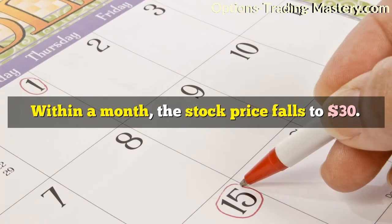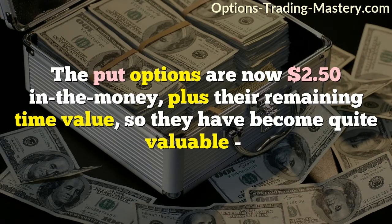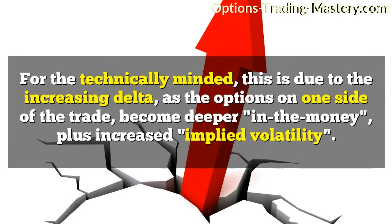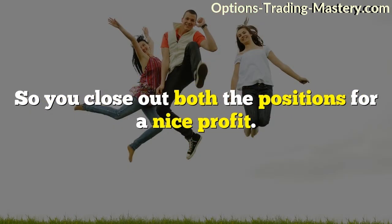Within a month, the stock price falls to $30. The put options are now $2.50 in the money, plus their remaining time value, so they have become quite valuable — so much so that their current value is worth more than the combined cost of the original out of the money call and put options, and then some. For the technically minded, this is due to the increasing delta as the options on one side of the trade become deeper in the money, plus increased implied volatility. So you close out both positions for a nice profit.